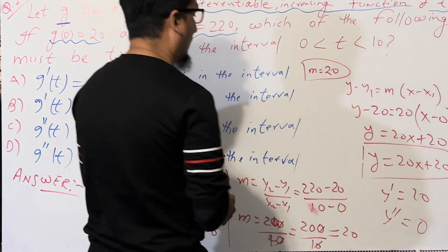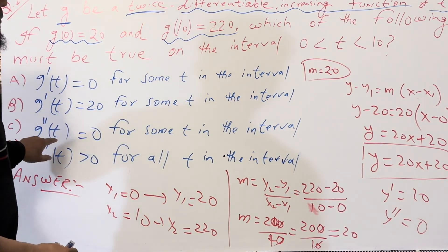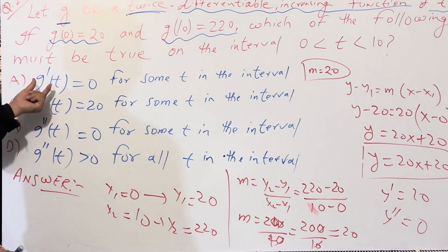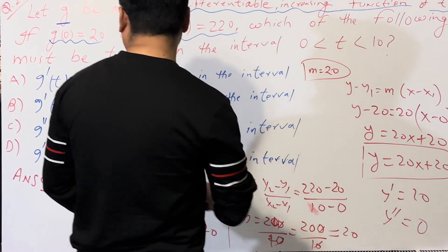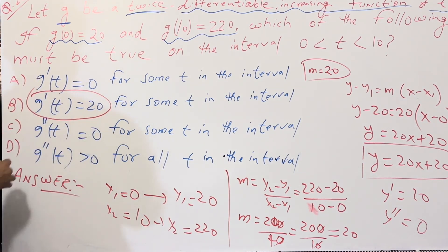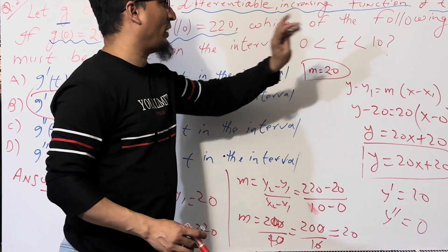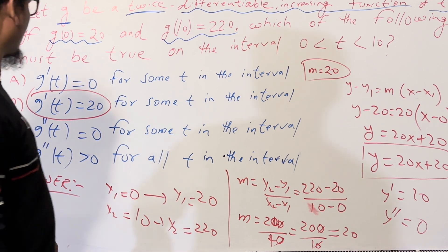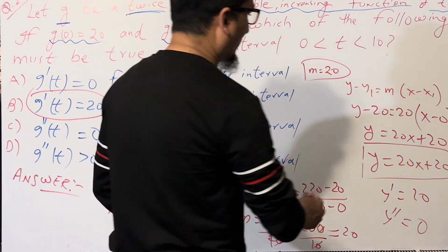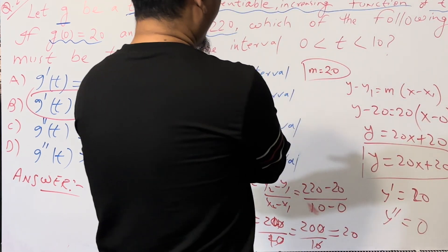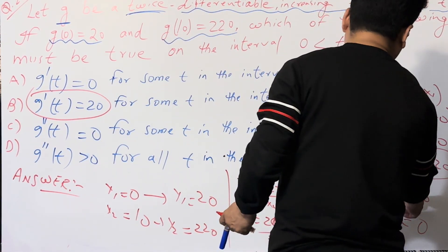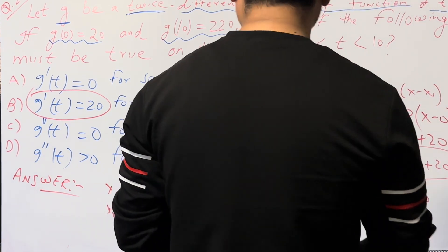And the double derivative G double prime is equal to 0. So the first derivative is 20 and the second derivative is 0. Now we are checking the conditions for specific values of T in the interval 0 to 10. The first derivative gives us 20, which is not equal to 0.